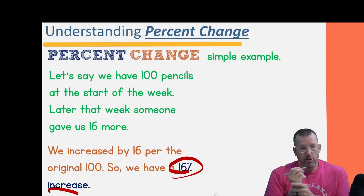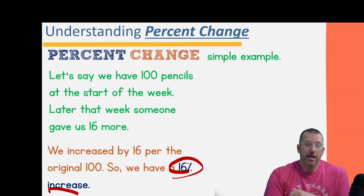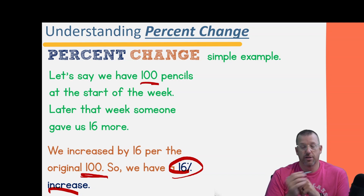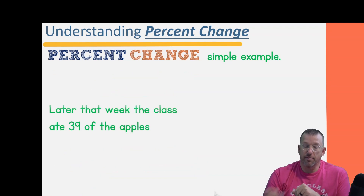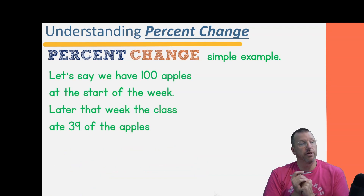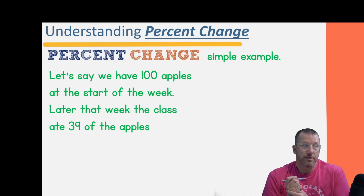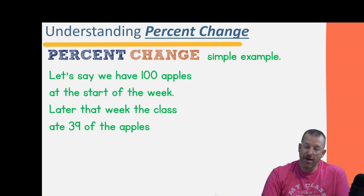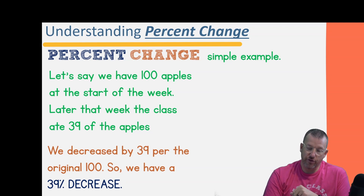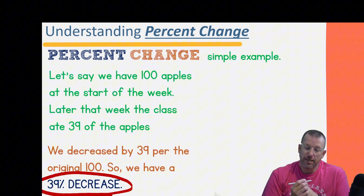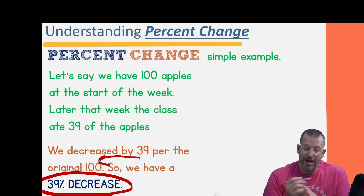Now, that was easy because we started with 100. In that case, whatever the change is, that number is the percent. For a decrease: if we have 100 apples and the class ate 39 of them, we went down by 39 from the original 100 — a 39 percent decrease. That works easily because it was out of 100.